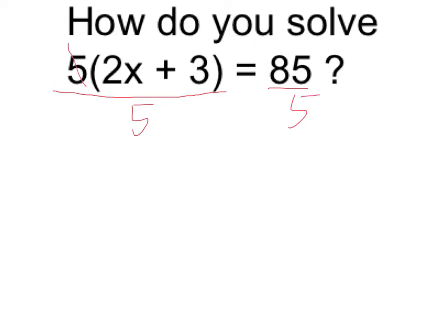Okay, so that's going to cancel out, leaving me on the left with simply 2x plus 3. On the other side of my equation, I have 85 divided by 5, which is 17.